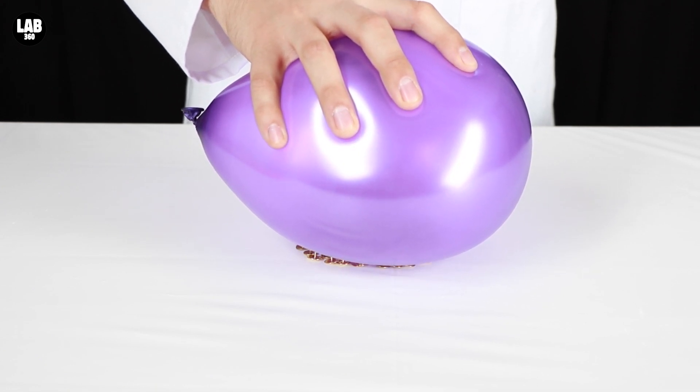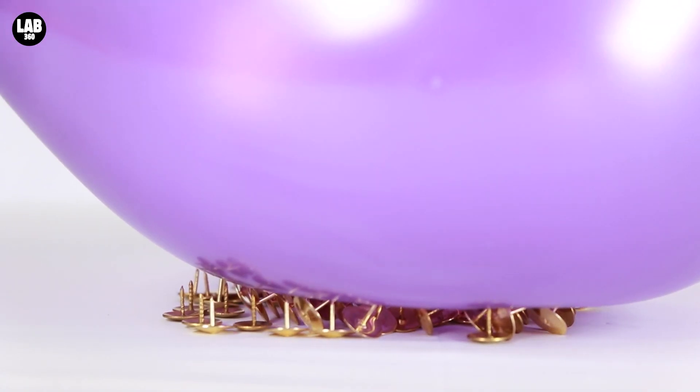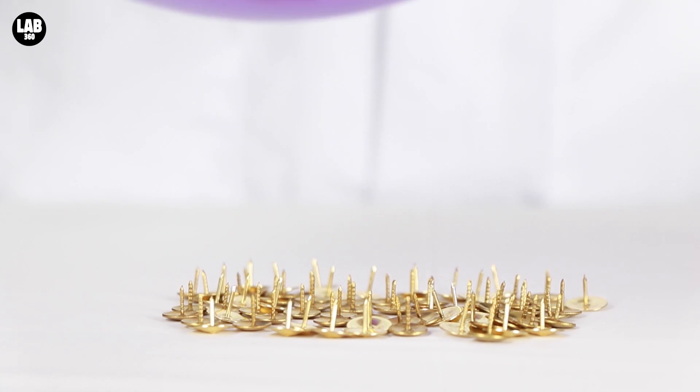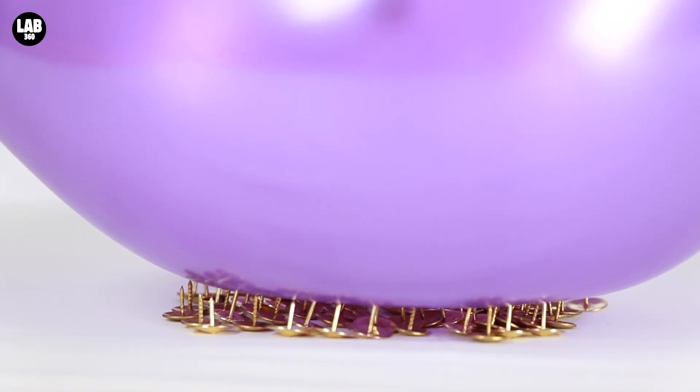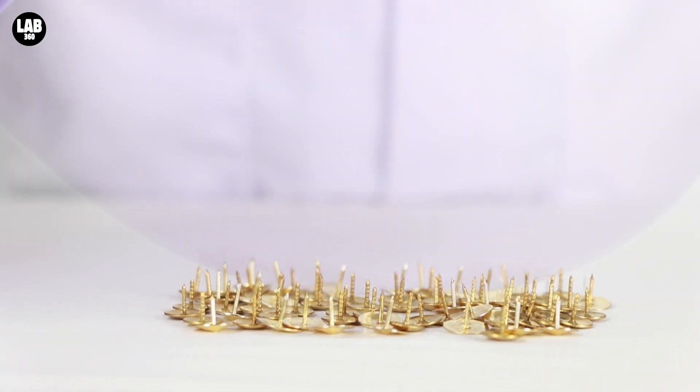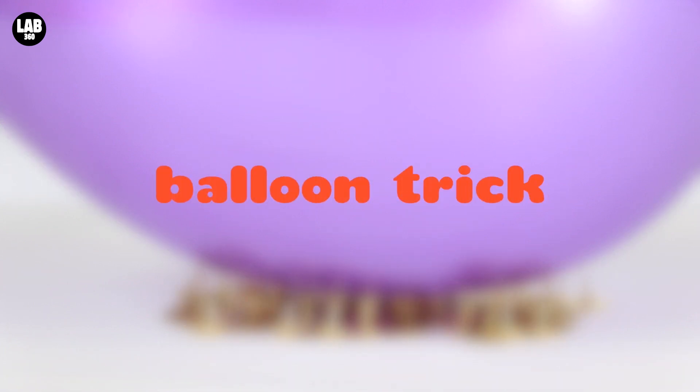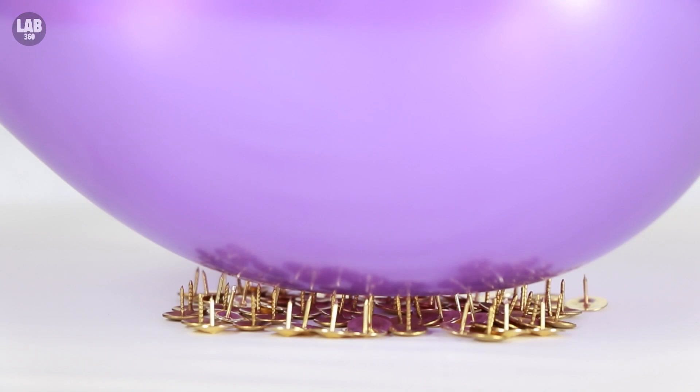When you push a pin against a balloon, one single sharp pinpoint creates a lot of pressure in one area, which pierces the rubber and pops the balloon. However, lots of pin points spreads the pressure against lots of different points, meaning there isn't much pressure in one single place, meaning it's very difficult to pierce the balloon. And there you have it. That's how you can perform the balloon trick.